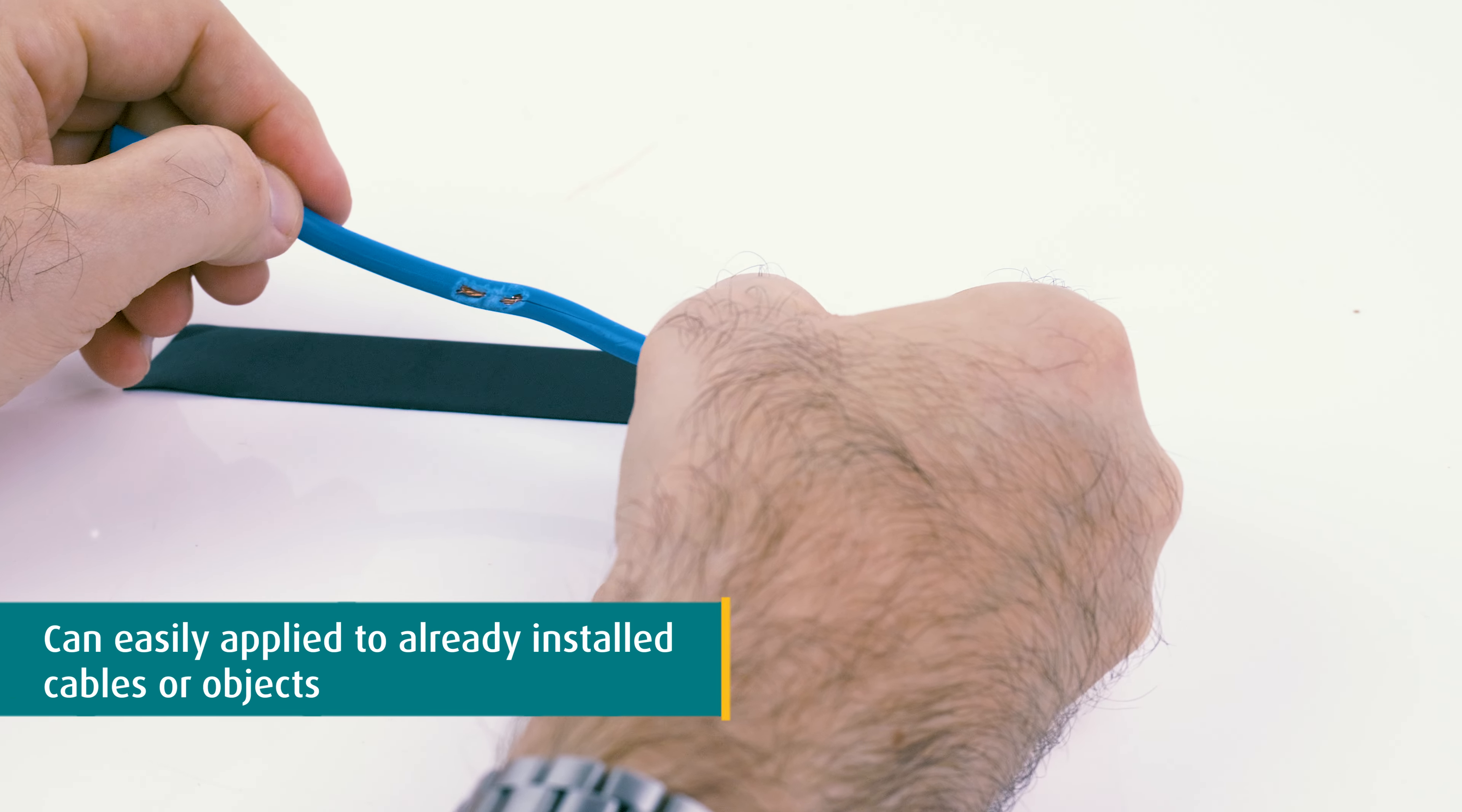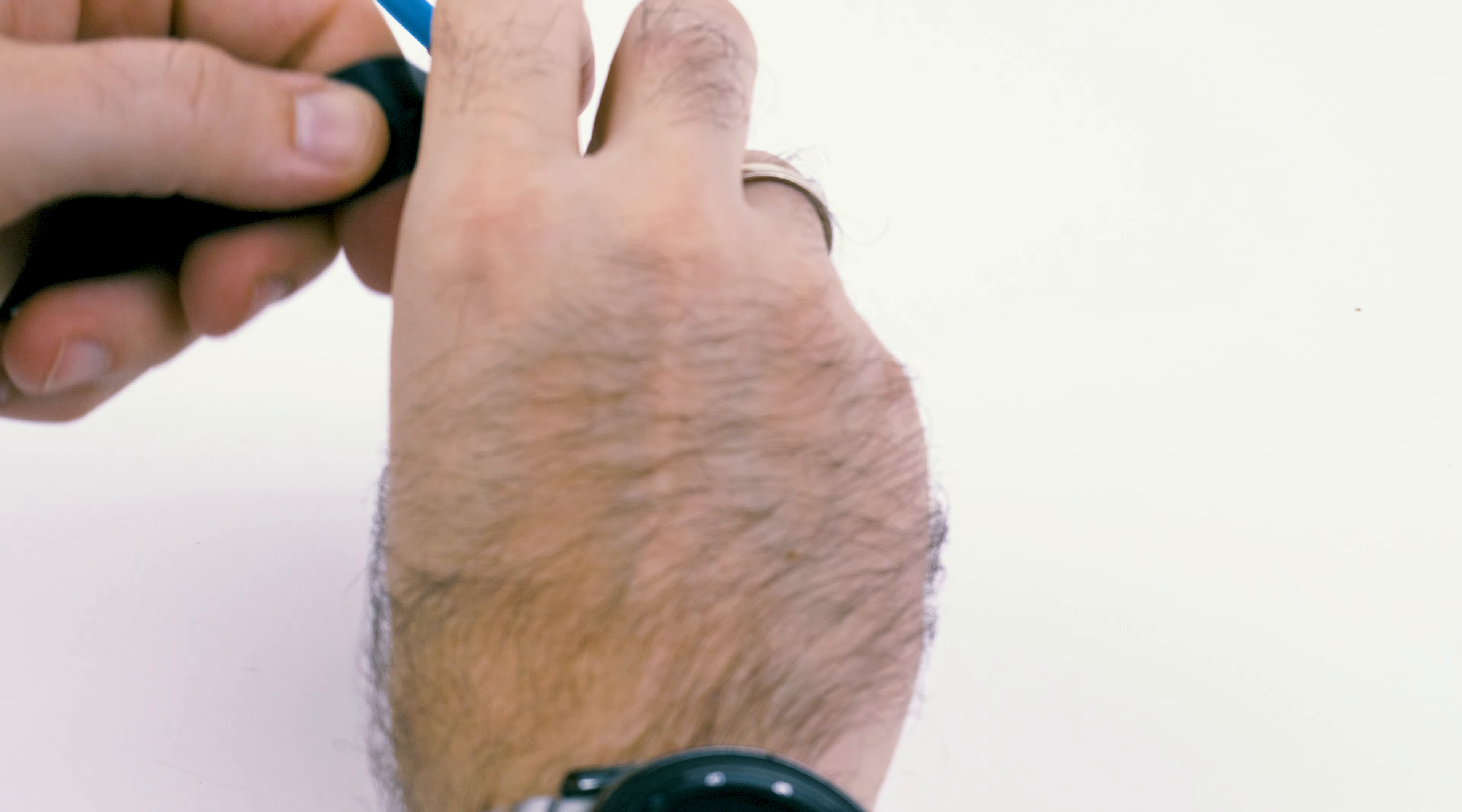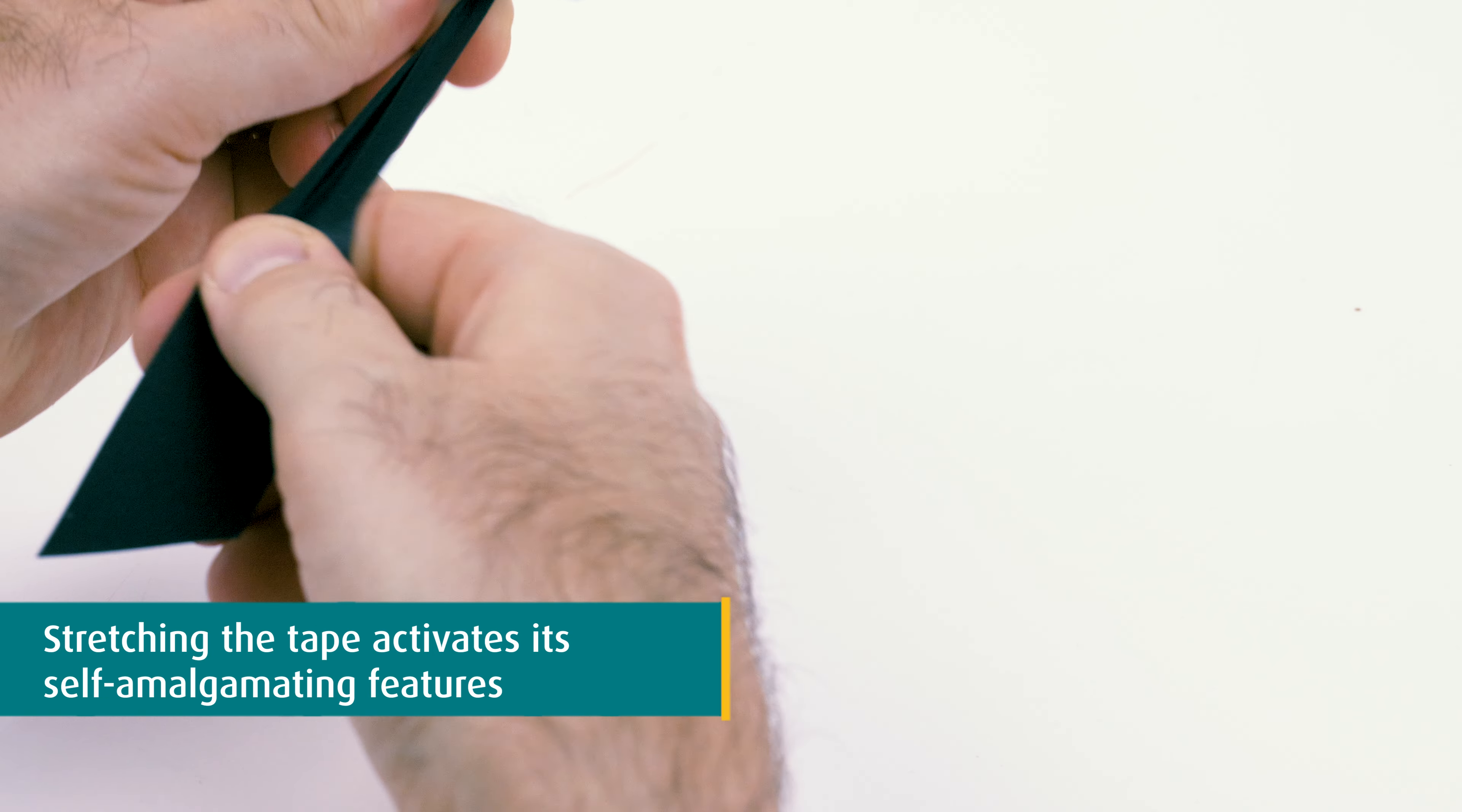The tape can easily be wrapped around the designated area, allowing for application on already installed cables and objects without any hassle. By stretching the tape during application and overlapping each layer by about half, a solid seal is achieved. This stretching activates its self-amalgamating feature.